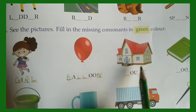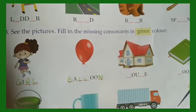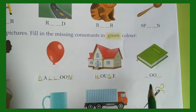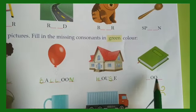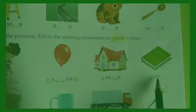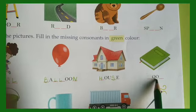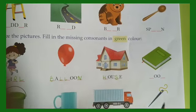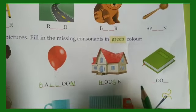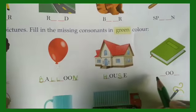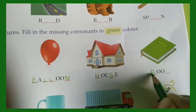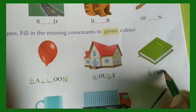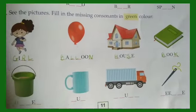This is a picture of a house. O is a vowel. And this is a picture of a book, so we will fill it with consonants. B is a consonant — B, O, O, K. Book. Right children.